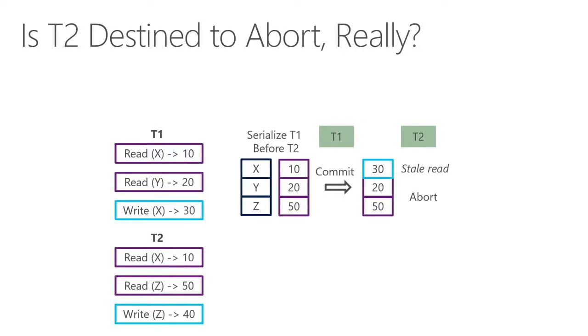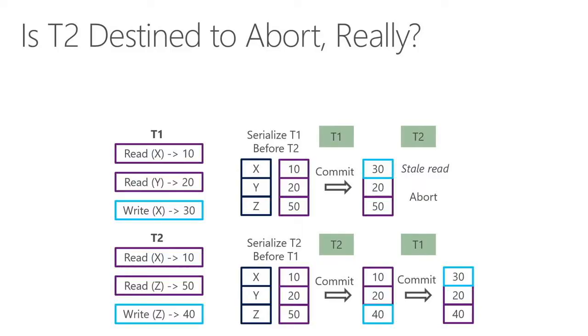The question we ask is: does T2 really have to abort? In this example, T2 has a stale read, so it seems hopeless. But if we can switch the serialization order — instead of serializing T1 first, we serialize T2 first — then T2 can make its update to Z, and when we validate T1, there's also no conflict. So both transactions can commit with a different serialization order.